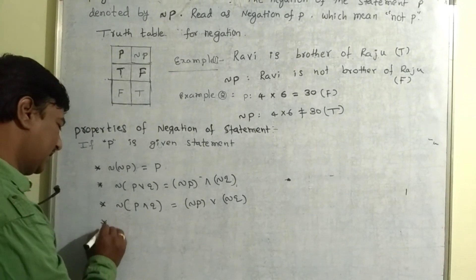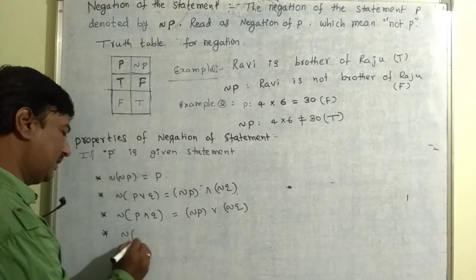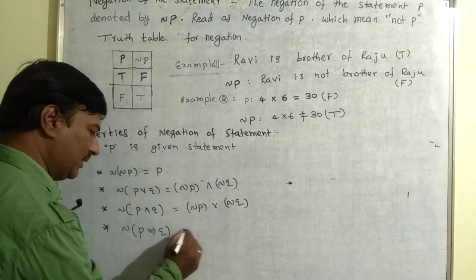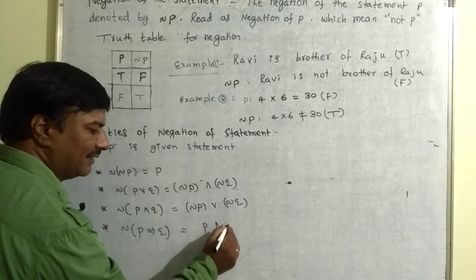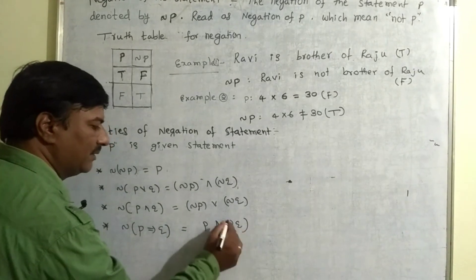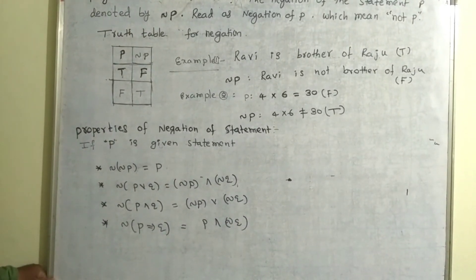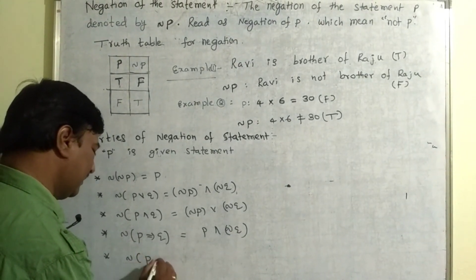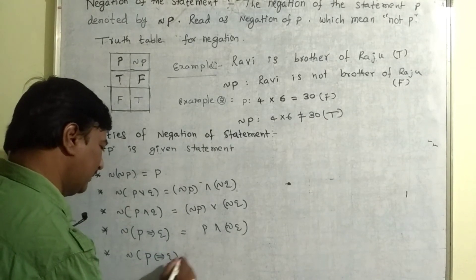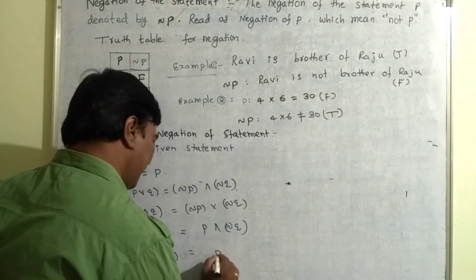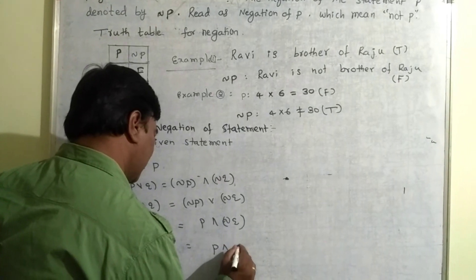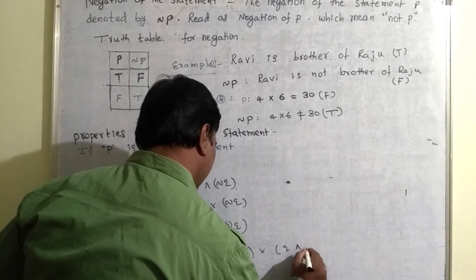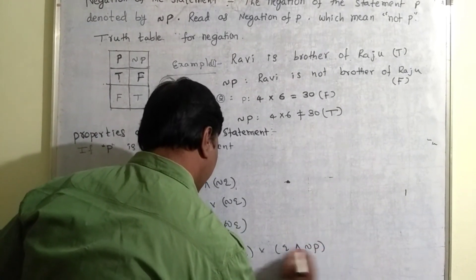Property number 4: the negation of P implication Q is equals to P and negation of Q. That is, negation of 'P implies Q' gives us P and negation of Q.